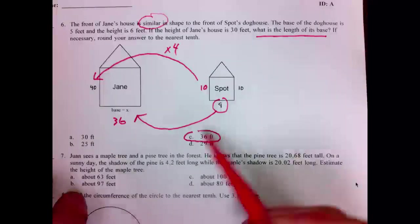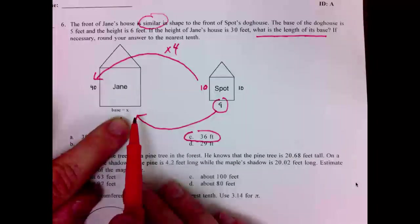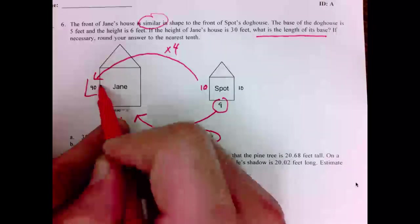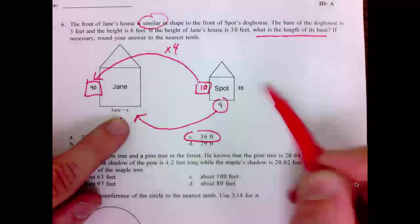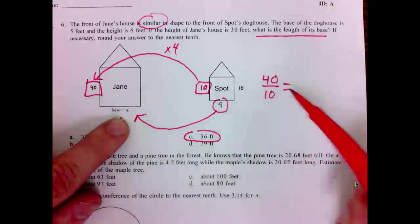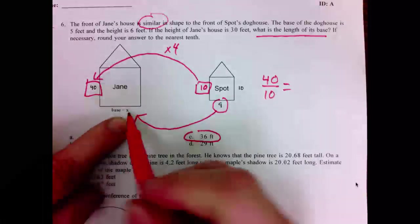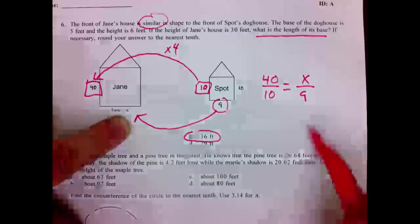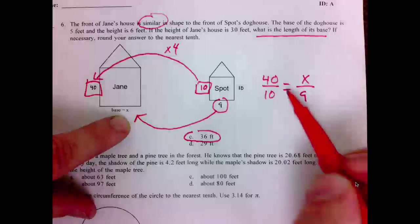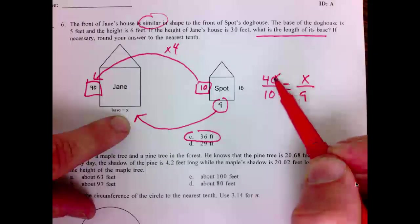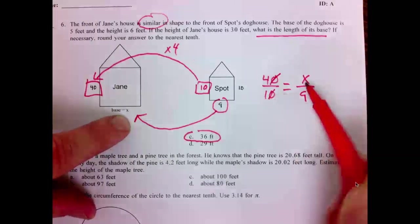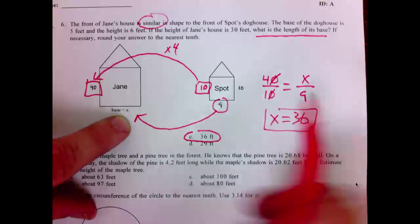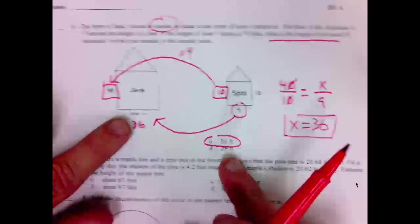Let's set up a proportion to find that. We don't know this value X. 40 corresponds with 10. 40 over 10 equals X over 9. Before I do my cross multiplication, let me do a divide here. 1 times X is X. 9 times 4 is 36. X is indeed 36. Number 6 is C.